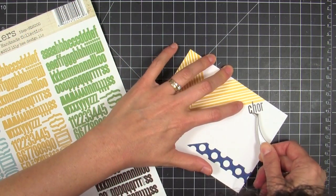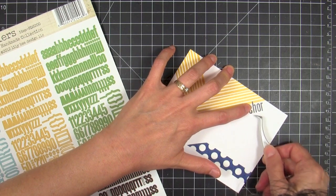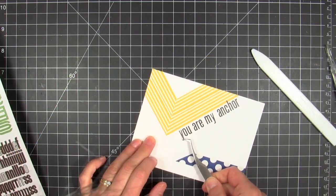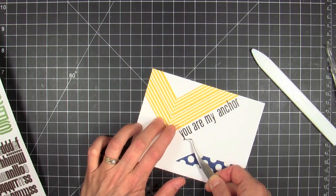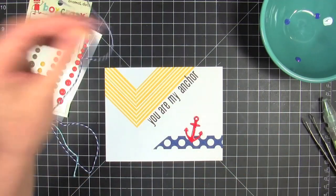To say what I wanted—I didn't have a stamp that said what I wanted—so I'm using these really fun ABC stickers by Lily Bee, and they're perfect because they're tall and they're skinny and I could spell out exactly what I wanted to say right there on my card. I thought it was fun to have it go along my chevron there.